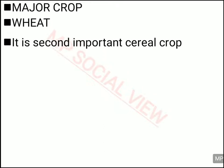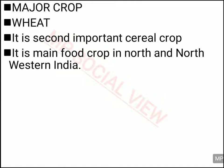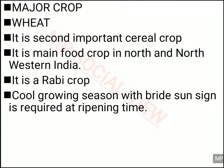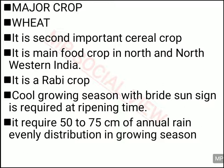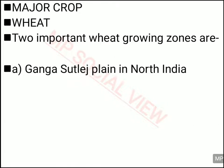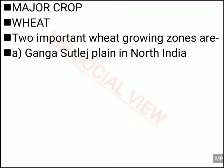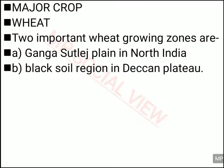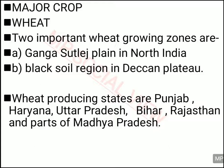Now let us discuss about the second major crop of our country — wheat. Wheat is one of the main food crops of North and Northwestern India. It is basically a Rabi crop, requiring a cool growing season and bright sunshine. Rainfall of about 50 to 75 cm is also needed, evenly distributed during the growing season. There are two important zones where wheat is sown: the Ganga-Sutlej Plain in Northern India and the Black Soil region of the Deccan Plateau. States famous for wheat cultivation are Punjab, Haryana, UP, Bihar, Rajasthan and parts of Madhya Pradesh.